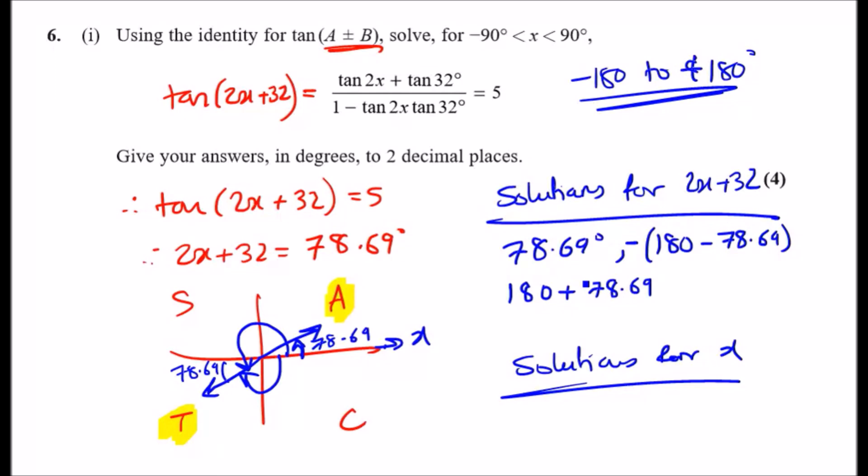We can also start from here again and go backwards all the way around until you hit this line, so it's almost a full 360 but 78.69 short. We can say 360 - 78.69, but it's negative, so it has to be negative outside. We could try going more times around, but if you solved for x, you might have solutions outside the range.